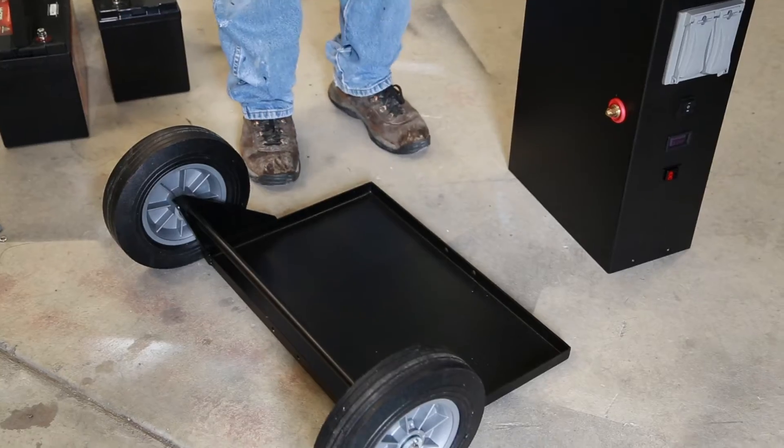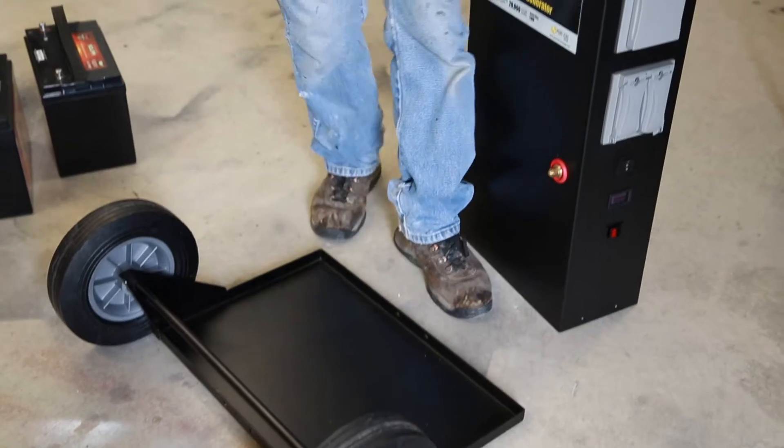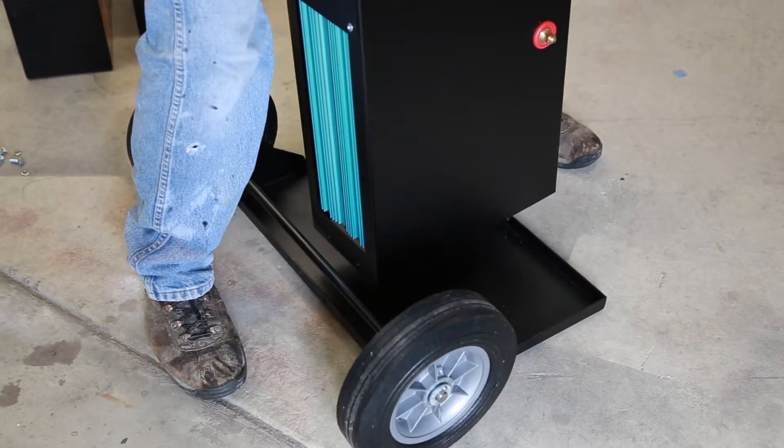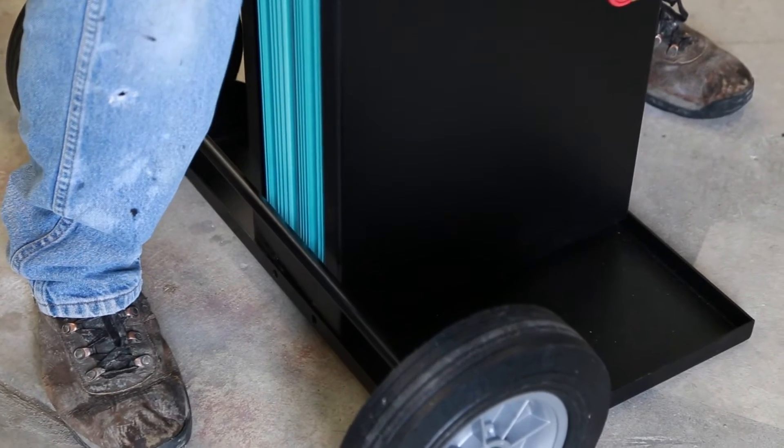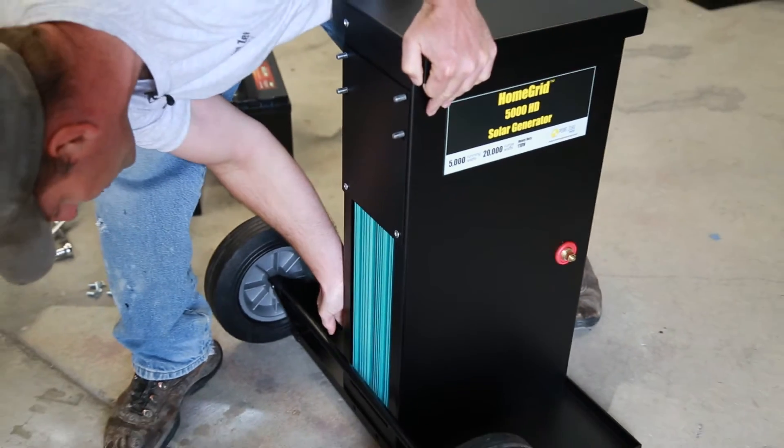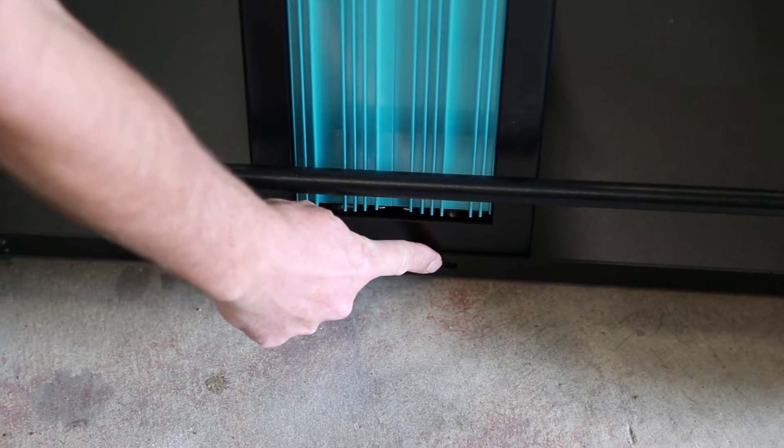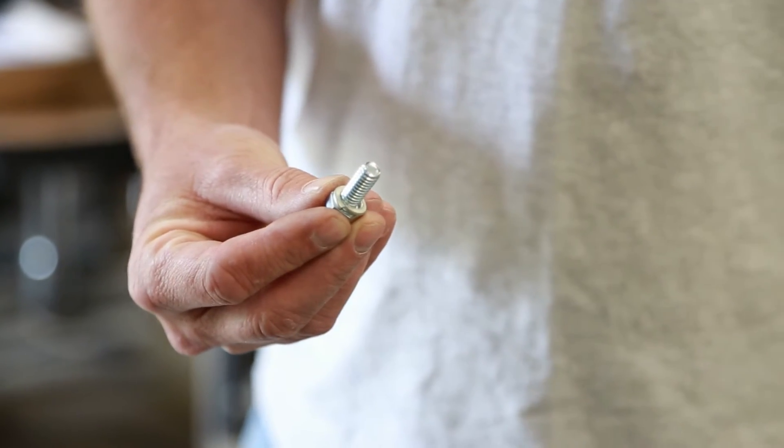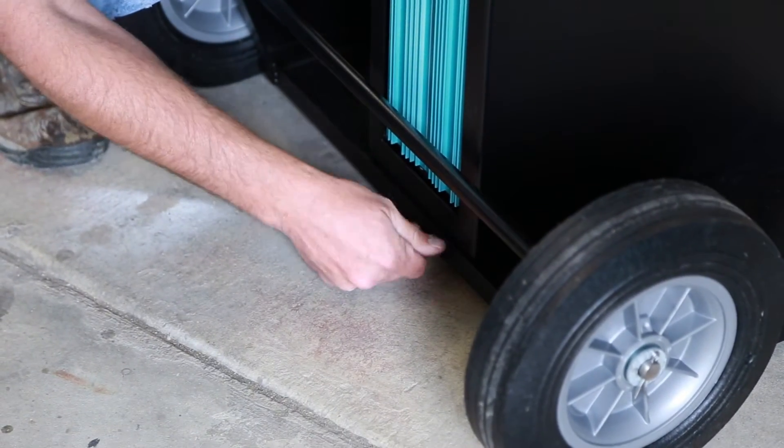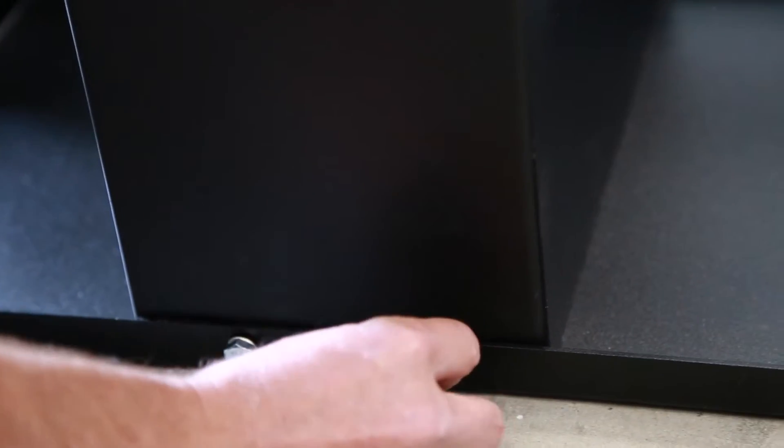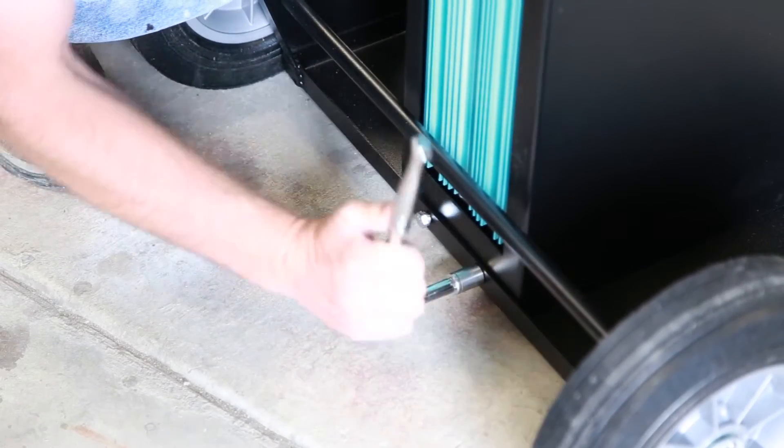The next step is to install the generator to the base plate. To do this we lift it and set it into the base plate, then line up the holes. Now you take a bolt and make sure you place a lock washer on it and then screw it into the bolt hole. You will need to do this for all four bolts. There are two on the back and two on the front.